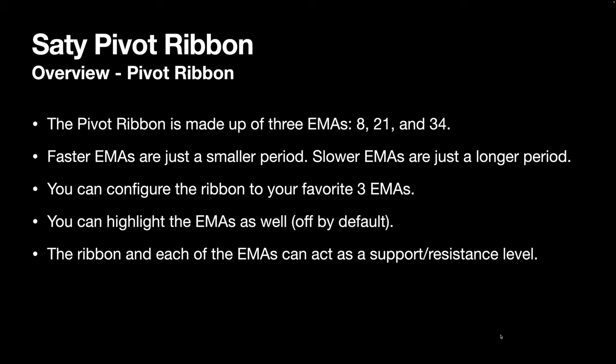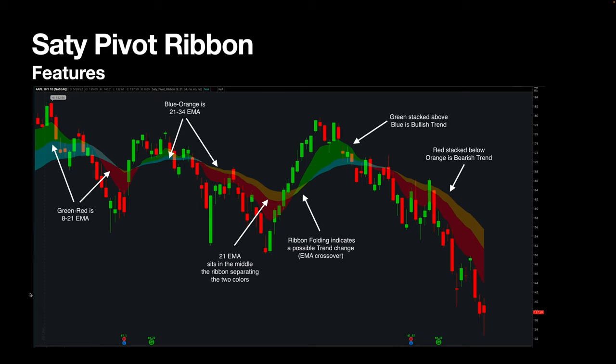You can also highlight those EMAs — that's off by default, but some folks like to have a clearer picture of where those EMAs are while also having the shading inside. That's available as well. The ribbon and each of the EMAs can act as support and resistance. Let's walk through some of the features. These are the defaults; if you change any values, just swap them out accordingly.